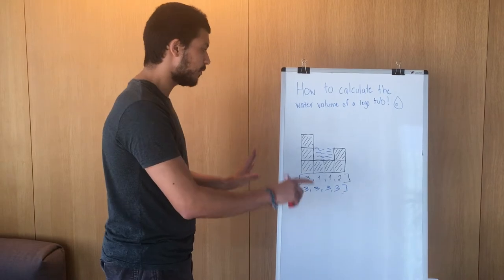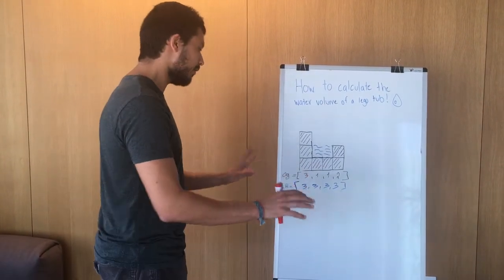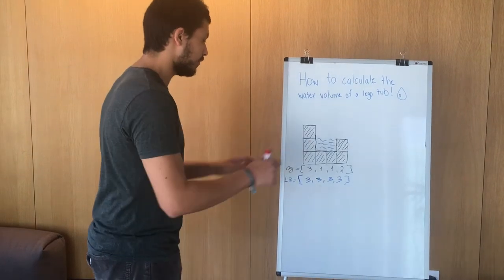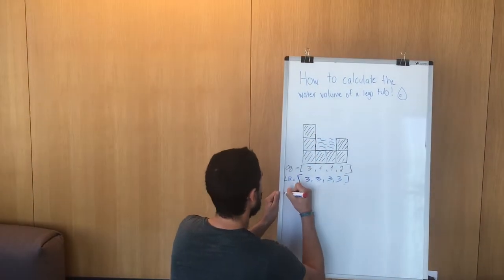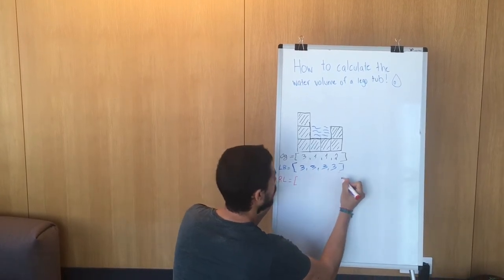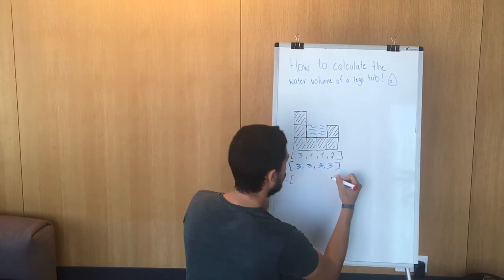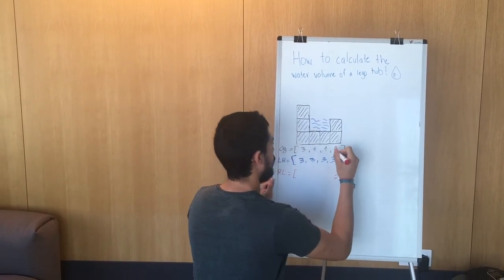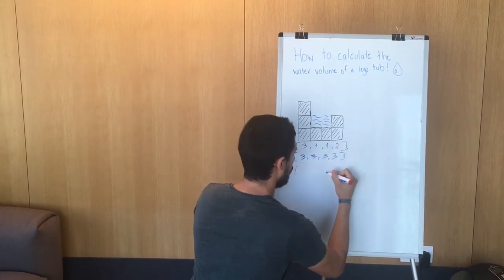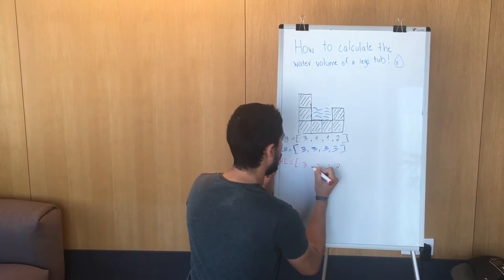Now we have this list. What we want to do is do the same thing but right to left. So we're going to call this new array RL right to left. And here, in our original configuration, we have 2, so it's going to be 2. Is 1 bigger than 2? No. Is 1 bigger than 2? No. Is 3 bigger than 2? Yes. So we keep 3.